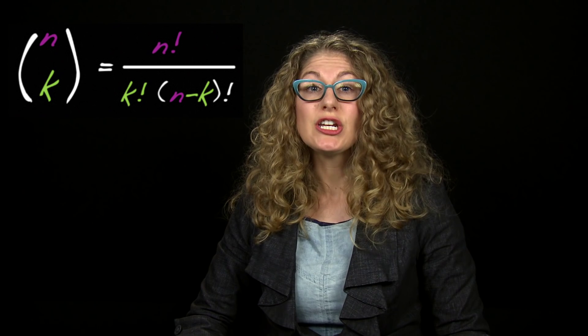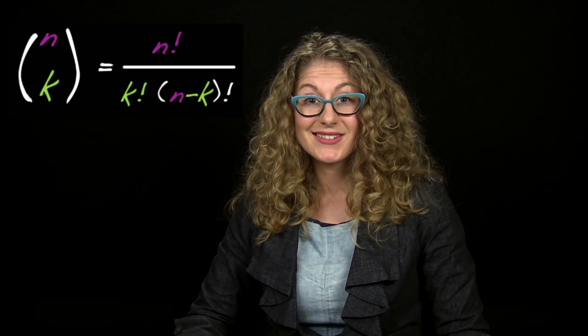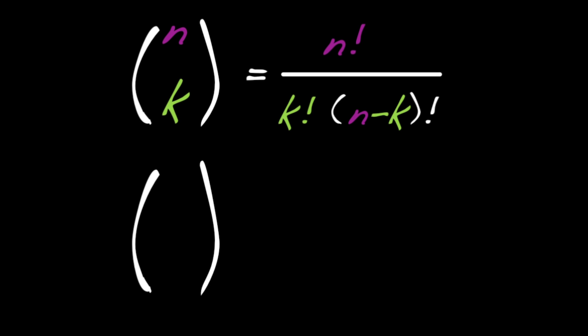It's powerful because you can use it whenever you're selecting a small number of things from a larger number of choices. With this tool, we can easily compute how many casts of four robots I can come up with when I have, let's say, 12 different robots to choose from. There are 12 choose 4, which if you work it out, is exactly 495.